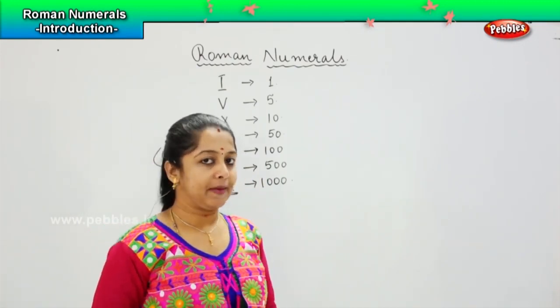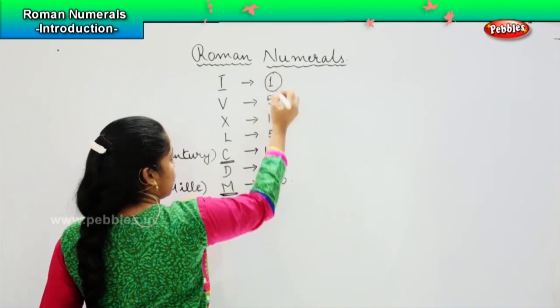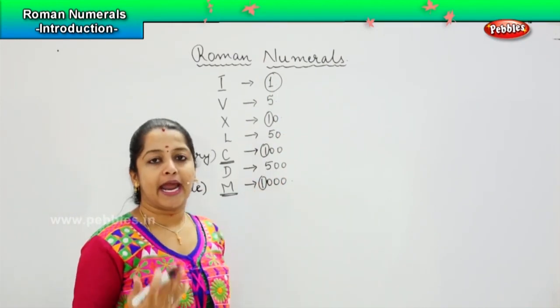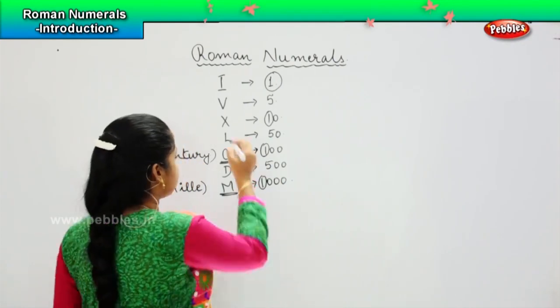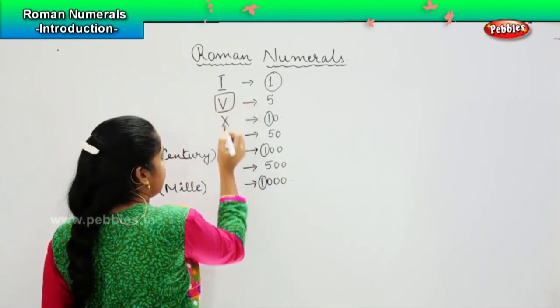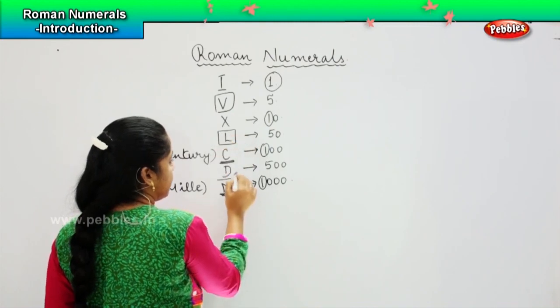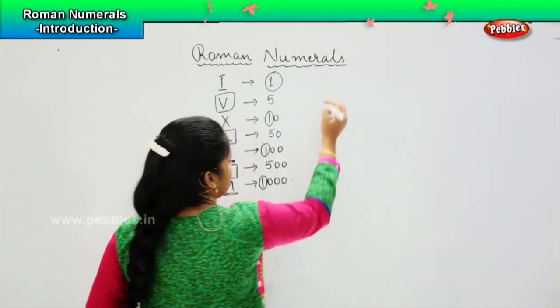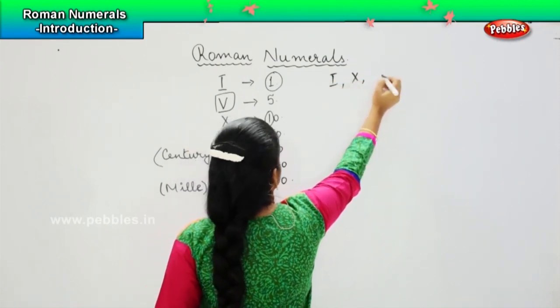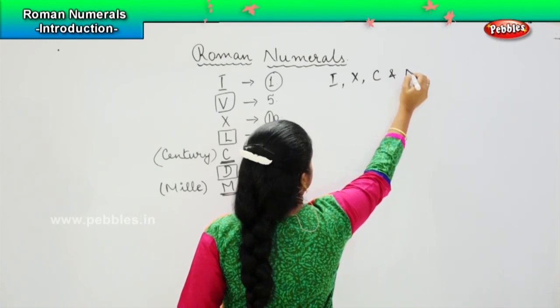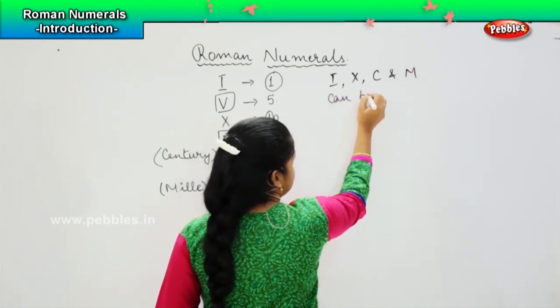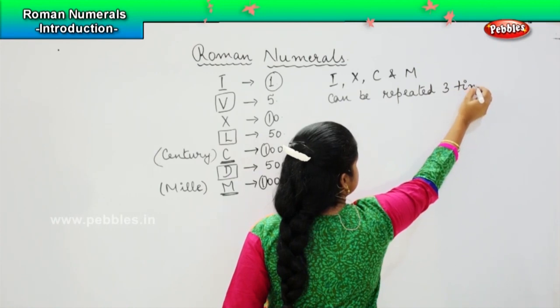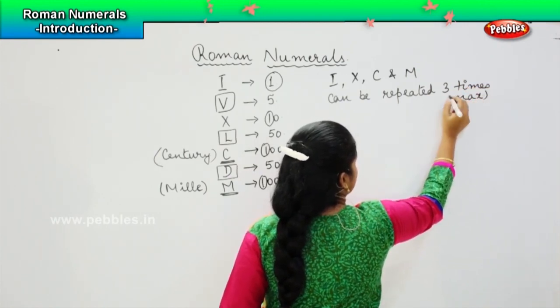Now one more thing which you have to keep in mind is for the numbers beginning with 1, it is possible for you to do an addition. You can add it three times in a Roman number. Whereas the numbers like V, L, and D cannot be repeated in a Roman number. The numbers like I, X, C, and M can be repeated three times max.